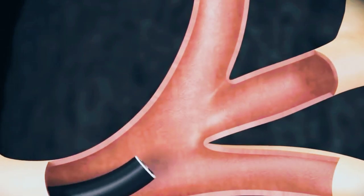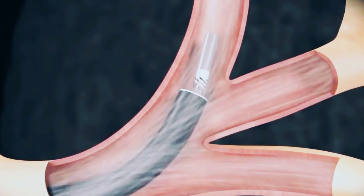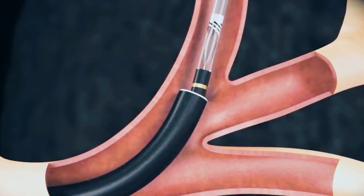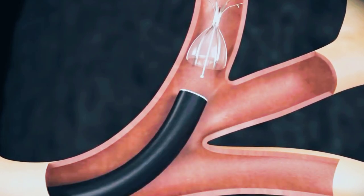The targeted airways are occluded with the IBV valve using a deployment catheter. The IBV valve is self-expanding and conforms to the airway.